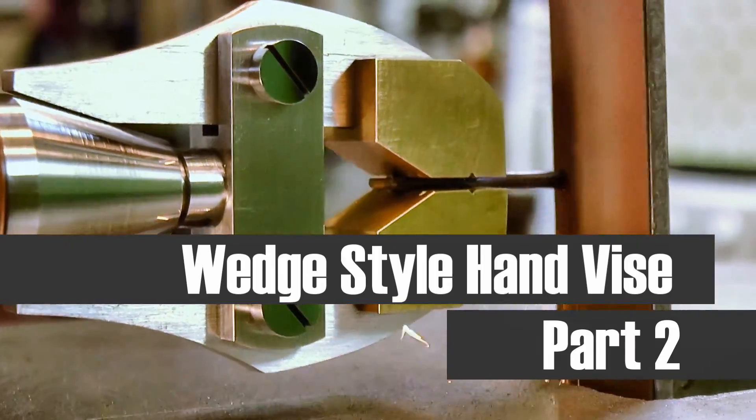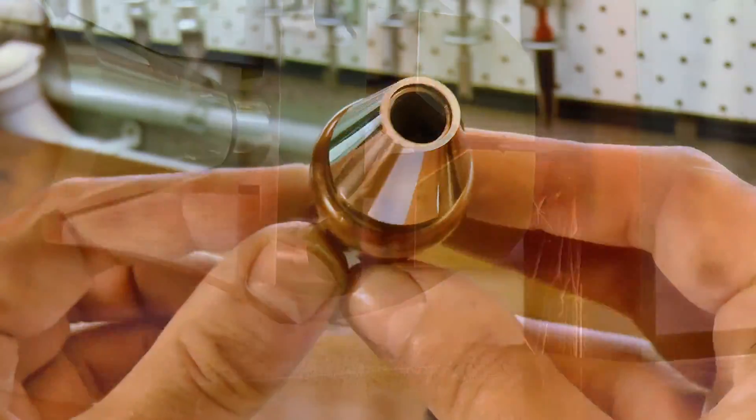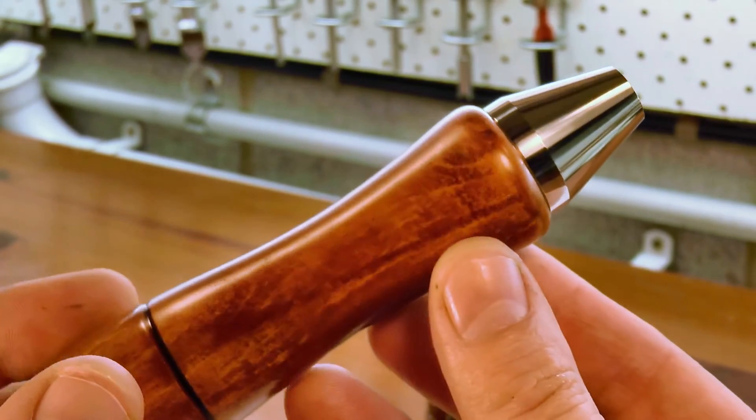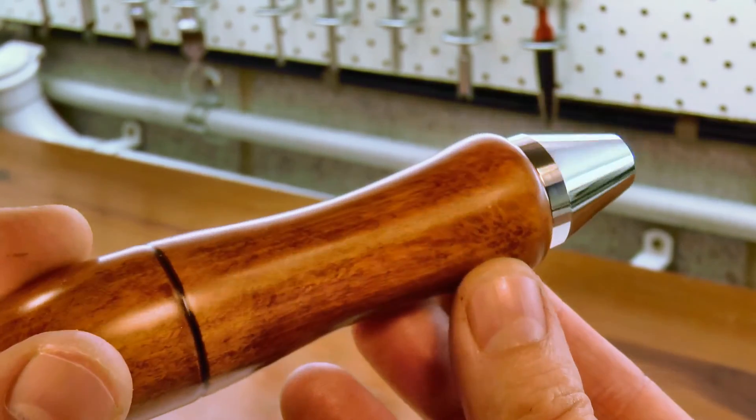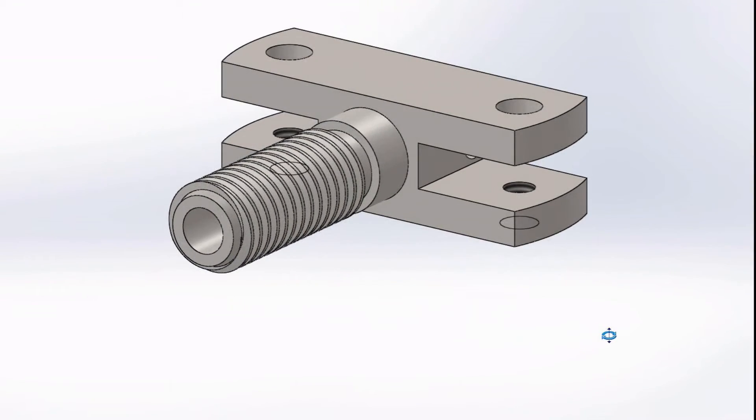G'day, Chris here, and welcome back to Clickspring. In the previous episode of this hand vise build, I made the handle and the cone shaped section that'll push the jaws together. In this episode, I make the main body of the tool, that accepts the jaws, pivot screws, and the return springs.